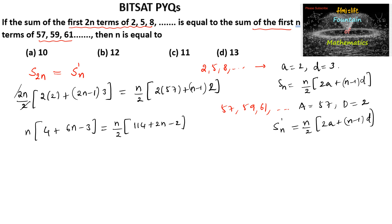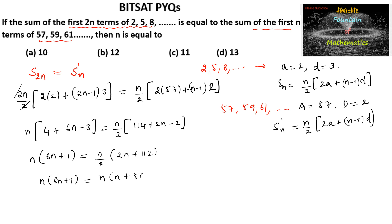Equating both sides: n times (6n + 1) = n/2 times (2n + 112), or n times (6n + 1) = n times (n + 56). Rearranging: n times (n + 56 − 6n − 1) = 0.